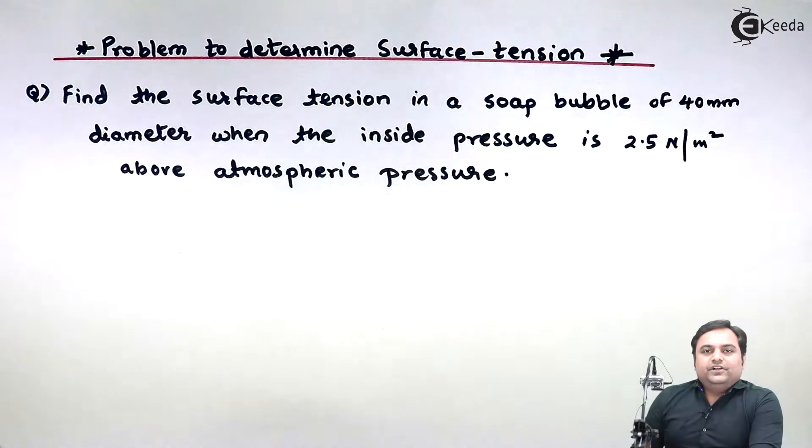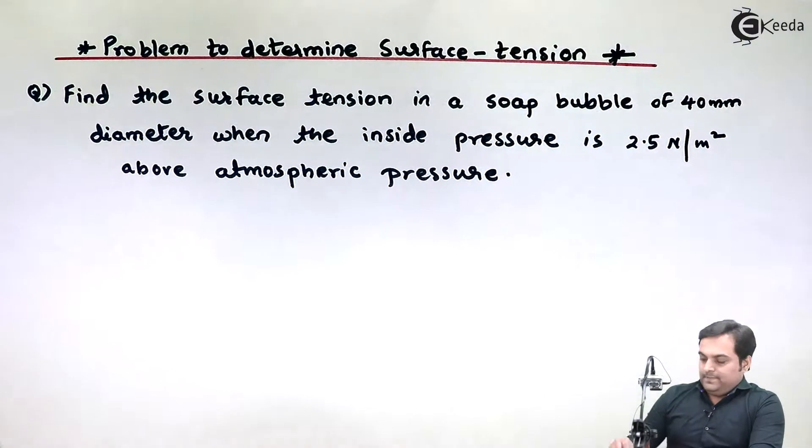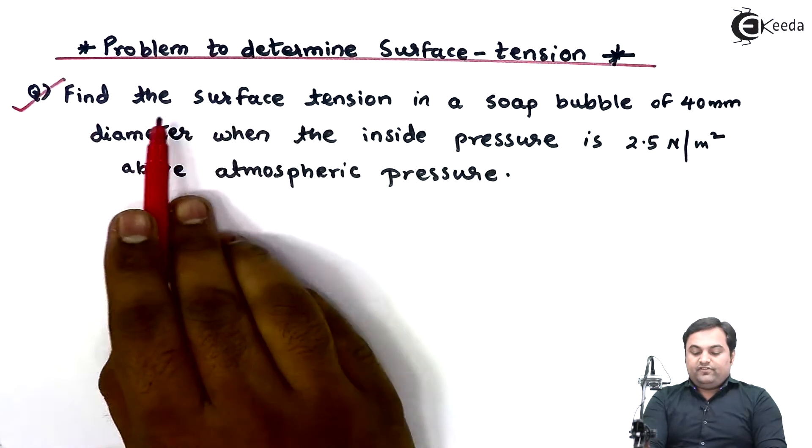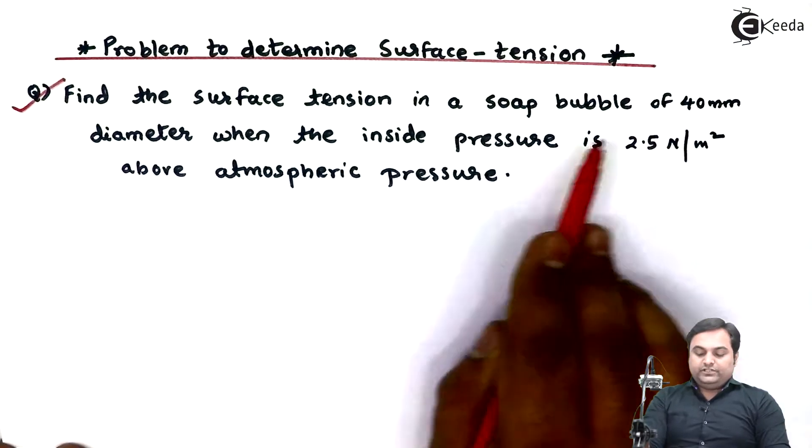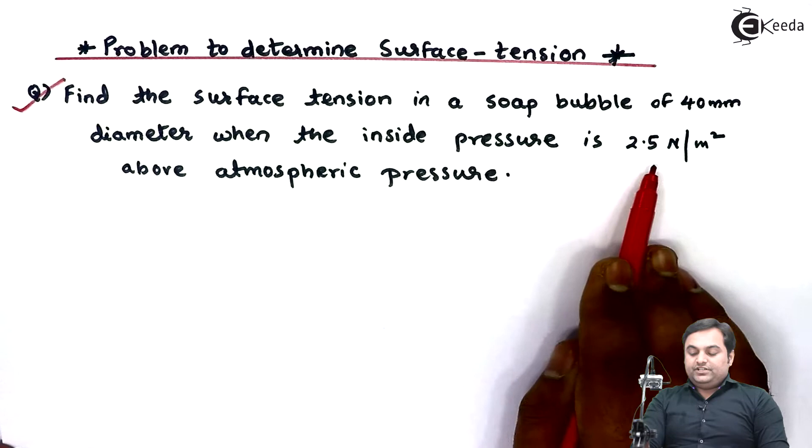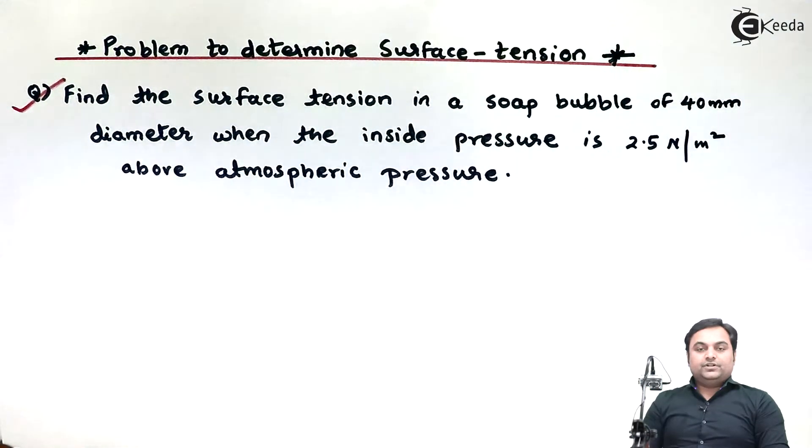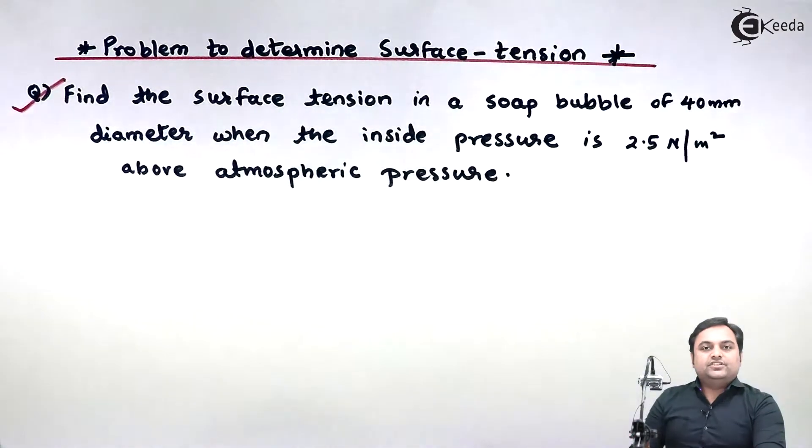Hello friends, in this video we will see how to find surface tension in a soap bubble. Here we have a question: Find the surface tension in a soap bubble of 40 mm diameter when the inside pressure is 2.5 Newton per meter square above atmospheric pressure.